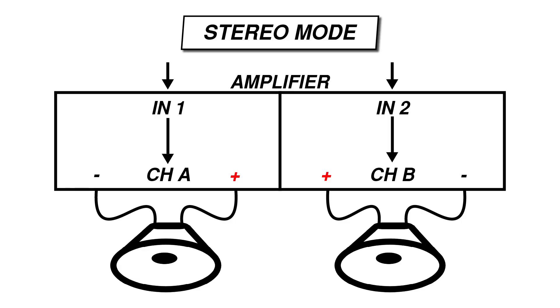The most common setup is stereo mode. This is the mode you'd use if you just wanted each channel of the amplifier to operate independently. In this example of a two-channel amplifier in stereo mode, input 1 is routed to channel A and input 2 is routed to channel B. It's the equivalent of using two separate amplifiers.